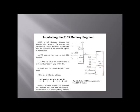Interfacing the 8155 memory segment: An 8205 3x8 decoder decodes address lines from A15 to A11; output O4 enables the memory chip. Control and status signals from the 8085 are connected to the respective signals of the memory chip. A7 to A0 address any one of the 256 registers. A14 and A15 are active low, and the third enable line is permanently enabled by tying it to +5V. A10 to A8 are not connected — they are don't care lines. O4 is low for the following address range: memory address range is from 200H to 20FFH. When don't care lines are at logic 0, by convention it is called the primary address.